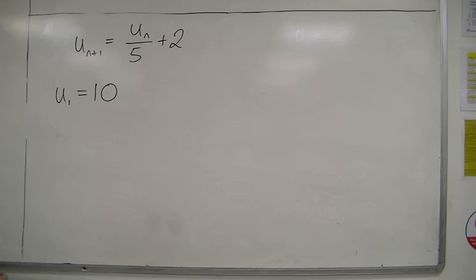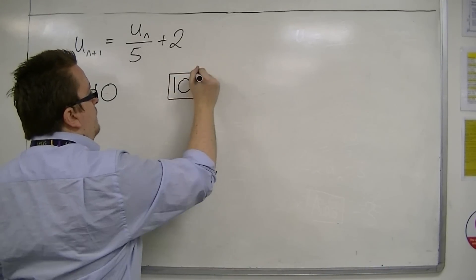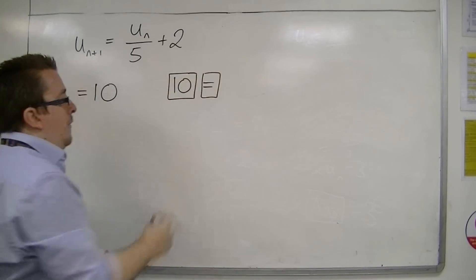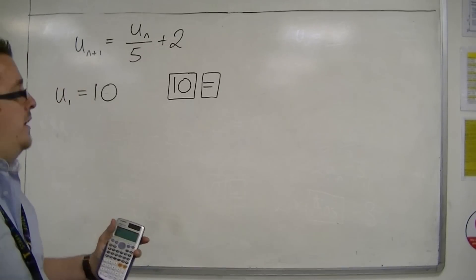So U1 is 10. In your calculator, if you put 10 and then equals, that's going to put 10 into its memory bank as the previous answer.